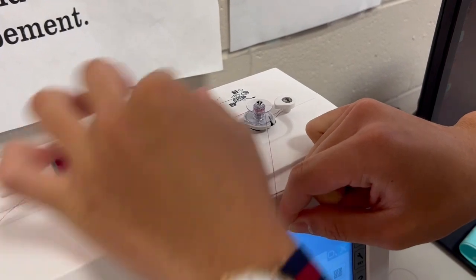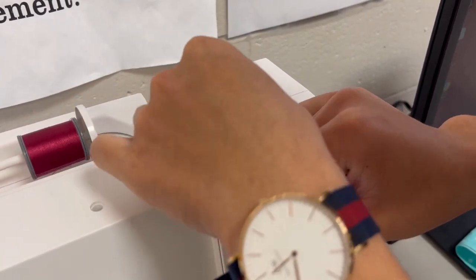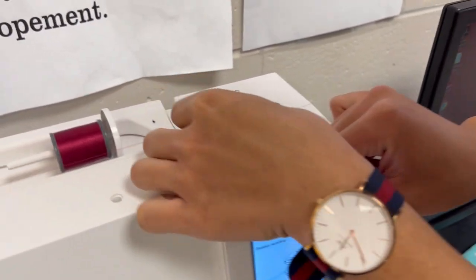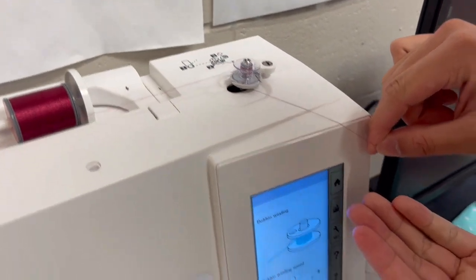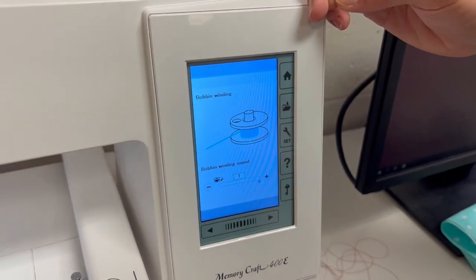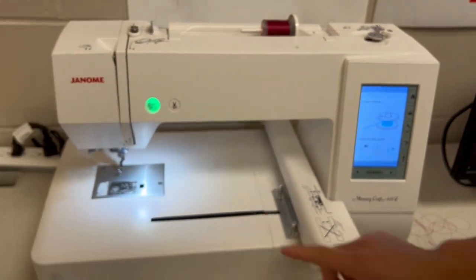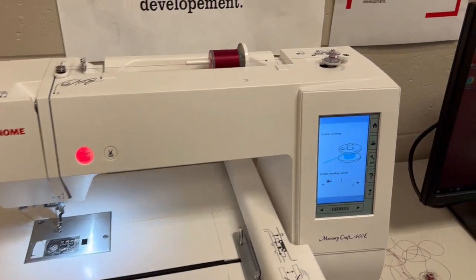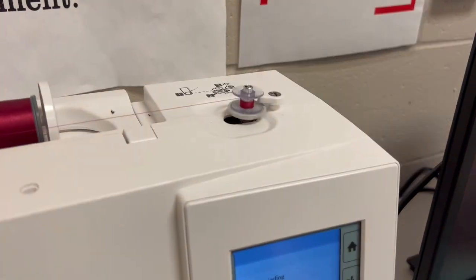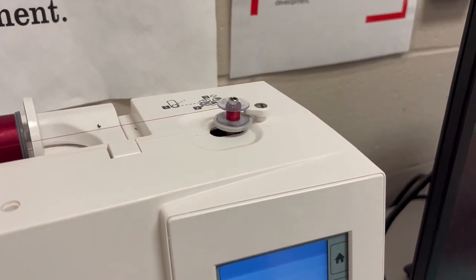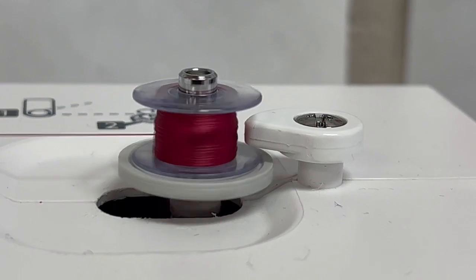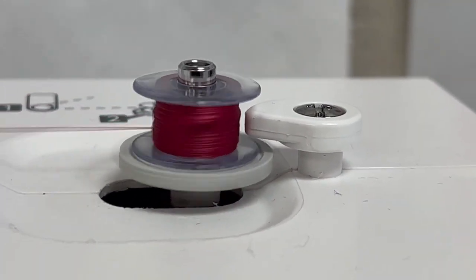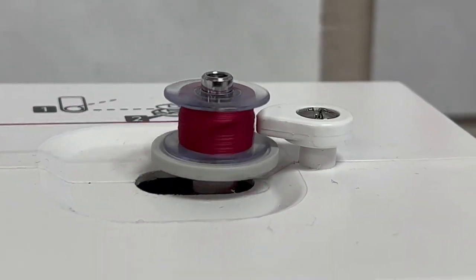When you're done, push the bobbin to the right and cut the thread on the bobbin thread cutter located under the bobbin. Finally, press the green start button. Press the red stop button when finished.